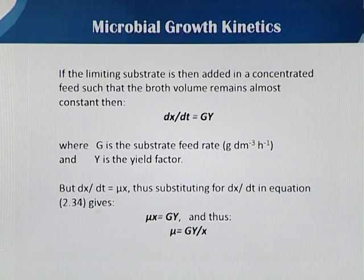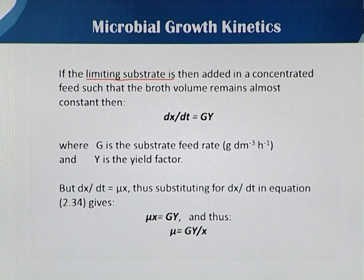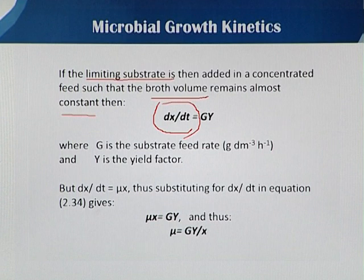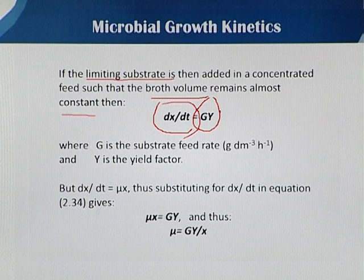If there is a condition in which you only add the limiting substrate, added in a concentrated feed such that the broth volume — the fermentation volume — remains constant, then we can say that dx/dt, meaning the change in biomass concentration with respect to time, is equal to g·y, where g is the substrate feeding rate and y is the yield factor.